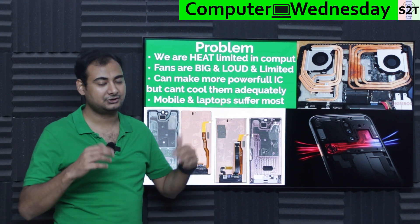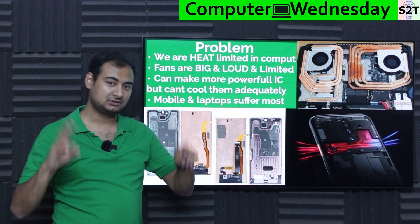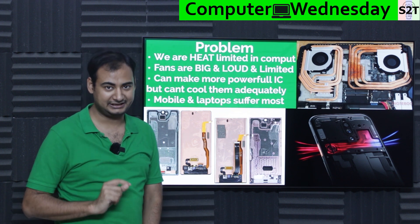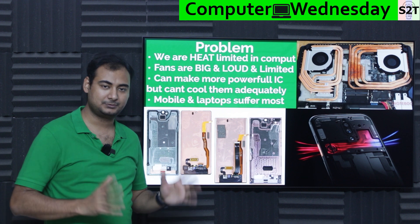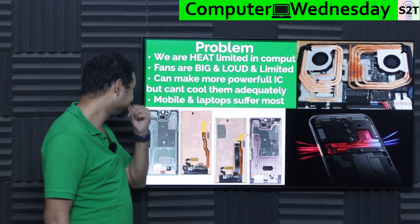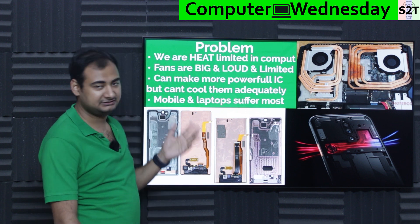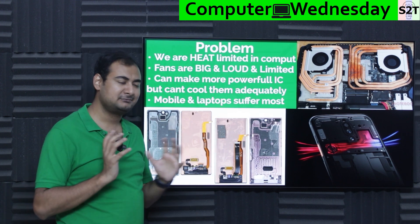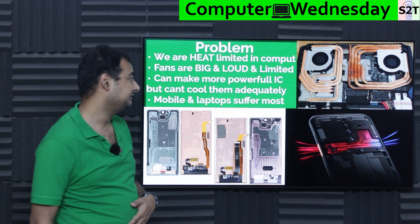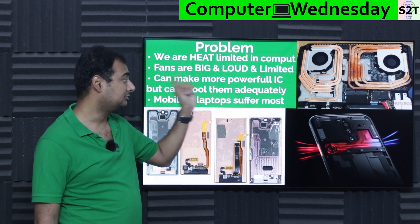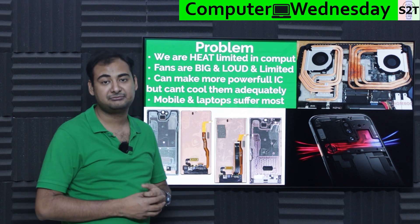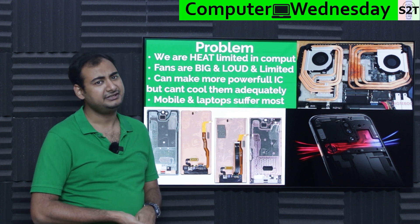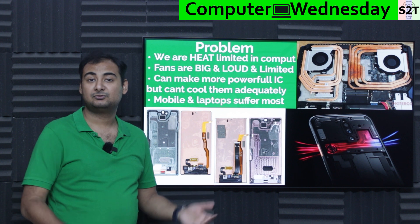Look at any modern flagship phone — you see giant vapor chambers, giant copper bars. Why? Heat. We can make SoCs that are super powerful but we cannot sustain that mode. Any company creating what we call a gaming phone literally puts fans in the mobile phone just to keep the SoC cool. We can make super powerful ICs, we just cannot cool them. You can't just put a fan on them — they're big, and making fans smaller is very inefficient. There's an optimum size, and below that you compromise too many variables. They're big, loud, and have very limited environmental tolerance.